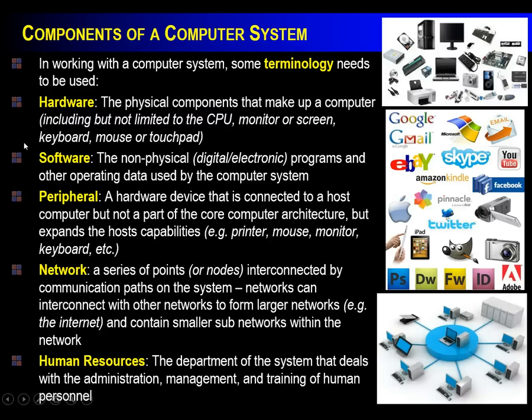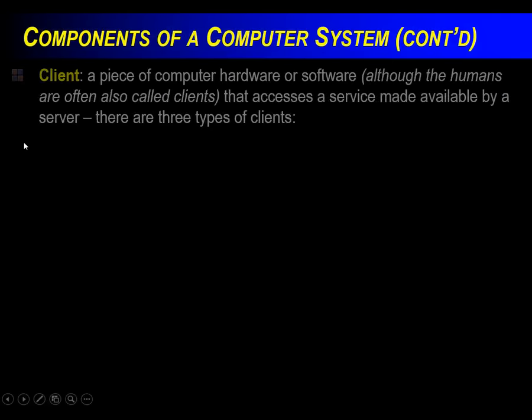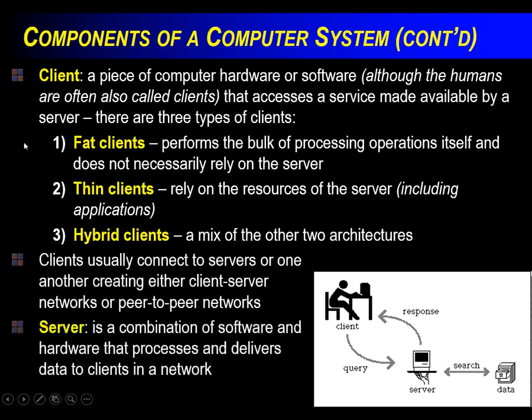Human resources refers to interconnecting the humans with the system itself. Now let's go over some other terms. A client is a piece of computer hardware or software — and a human as well — that accesses services made available by the server. There are three types of clients. A fat client handles the bulk of processing operations itself and does not rely heavily on the server. These computers are fat clients — when you open Microsoft Word, it doesn't need to talk to the server to do that.